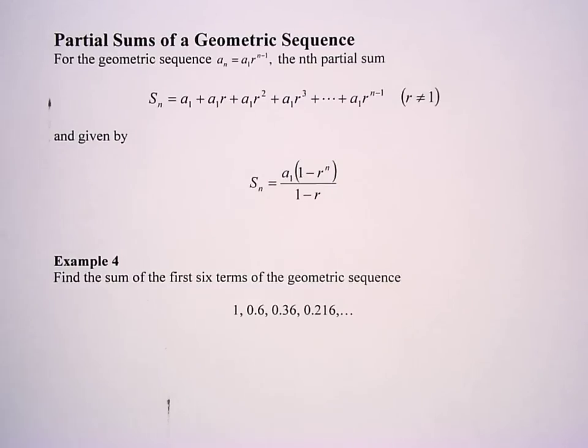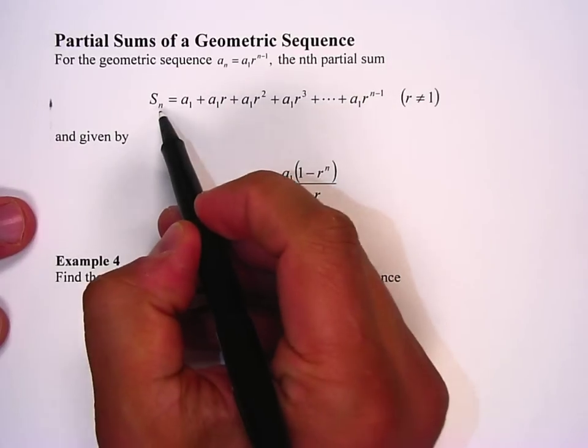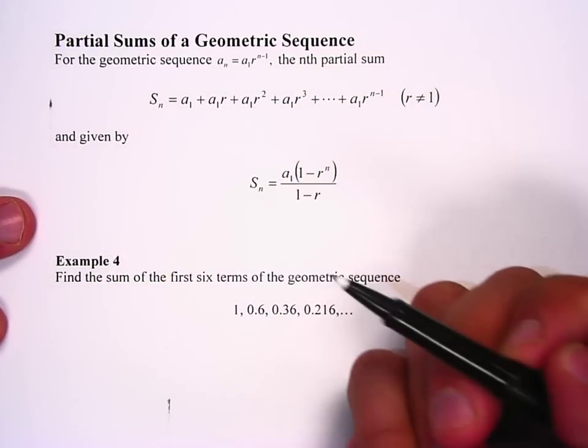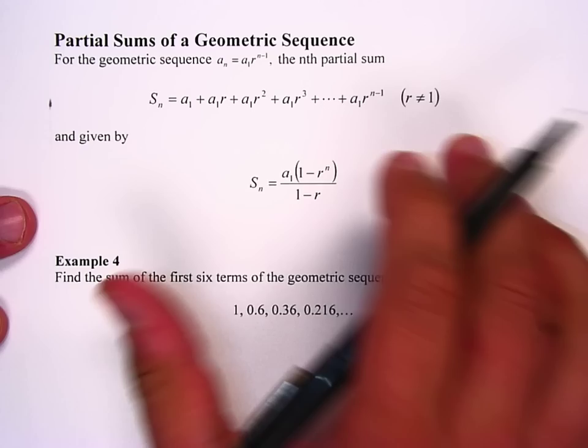Now just like in arithmetic sequences we have geometric sequences that we can find partial sums for. Any partial sum like the sum of the first term, sum of the first two terms, you would have the first two terms together and so on and so forth.